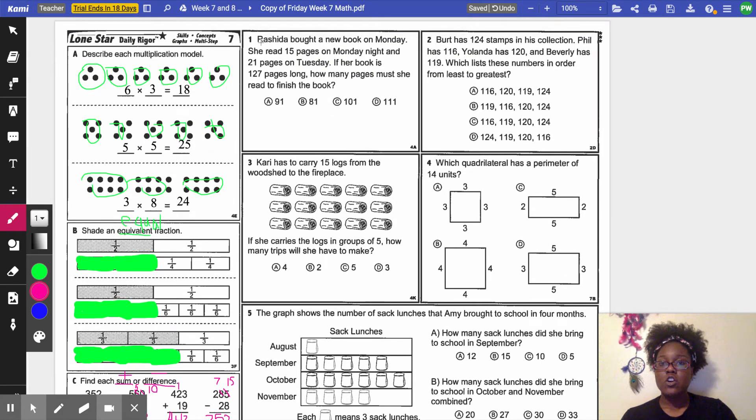Moving on to number 1. Rashida bought a new book on Monday. She read 15 pages on Monday night. I'm going to circle 15. And 21 pages on Tuesday. If her book is 127 pages long, how many pages must she read to finish the book? So first of all, I'm thinking this has to be a two-step problem. Because on Monday, she reads 15 pages. On Tuesday, she reads 21 pages. So I know that I'm probably going to put those two numbers together. But then it says her book is 127 pages long. So I know I'm not going to add to 127, because that's my total number of pages. I can't get anything more than 127. So I'm going to have to subtract whatever I get from 127.